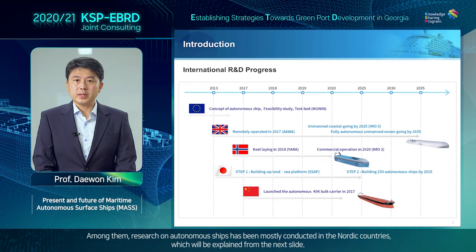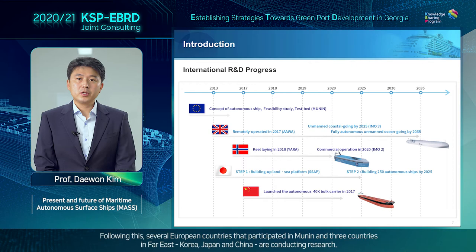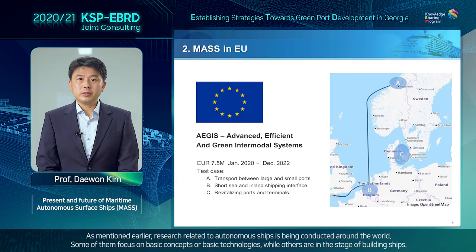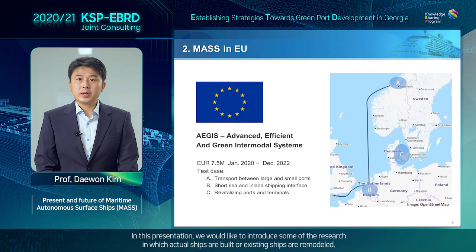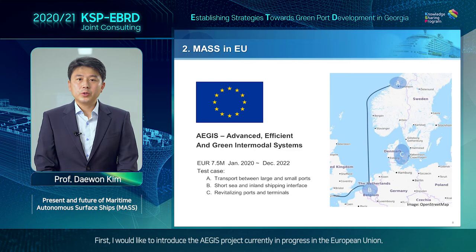Following this, several European countries that participated in MUNIN and three countries in the Far East — Korea, Japan, and China — are conducting research. As mentioned earlier, research related to autonomous ships is being conducted around the world. Some of them focus on basic concepts or basic technologies, while others are in the stage of building ships. In this presentation, we'd like to introduce some research in which actual ships are built or existing ships are remodeled.